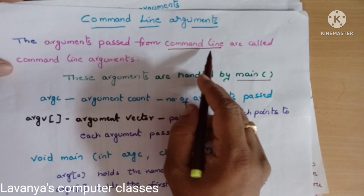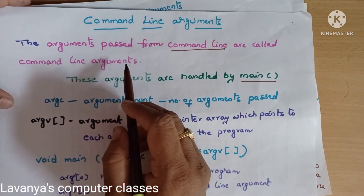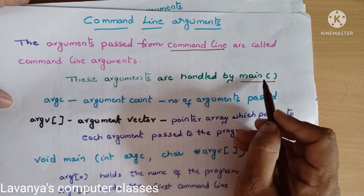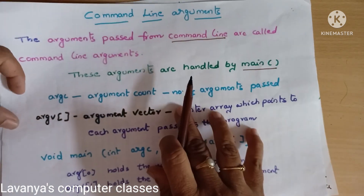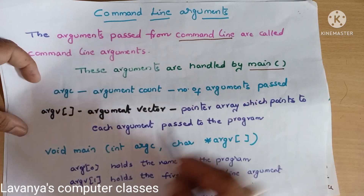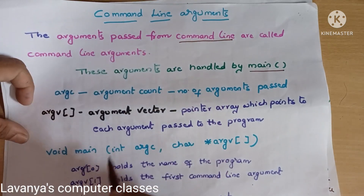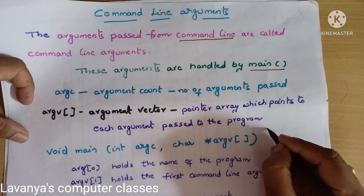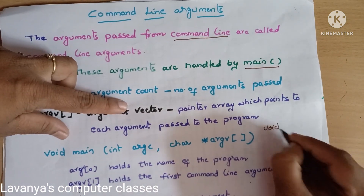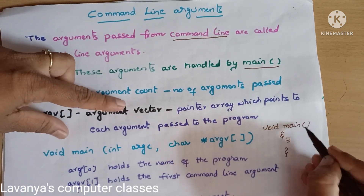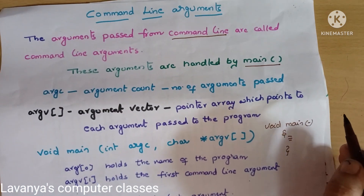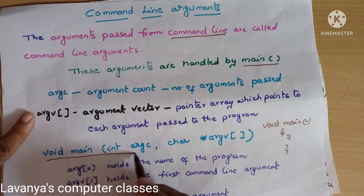The definition of command line arguments: the arguments passed from the command line are called command line arguments. We send these arguments using the main function. Whenever we use command line arguments, we change the structure of the main. Until now we wrote 'void main' with no arguments in the brackets. But when using command line arguments, the structure changes.